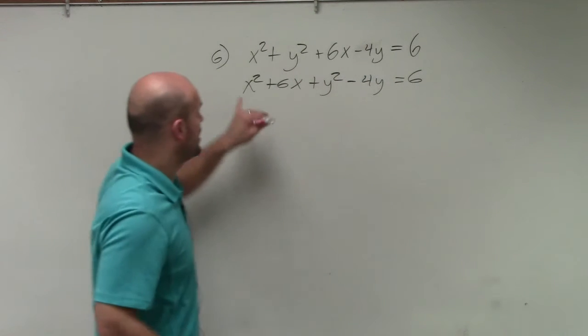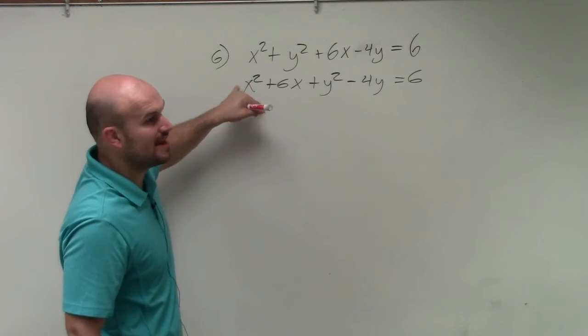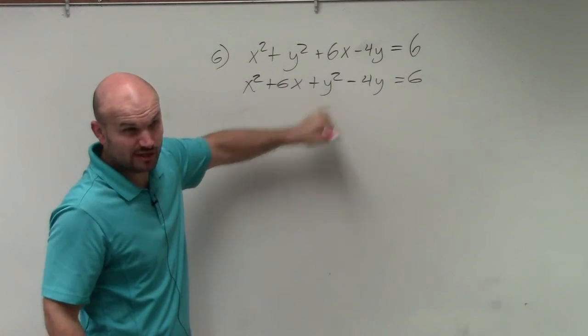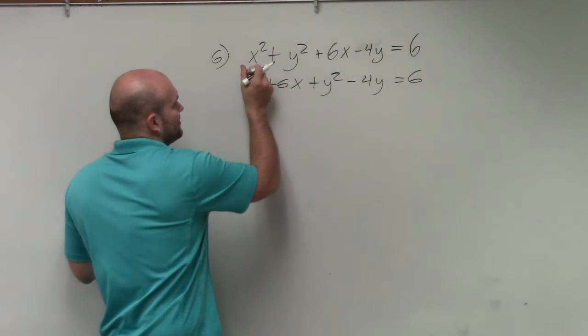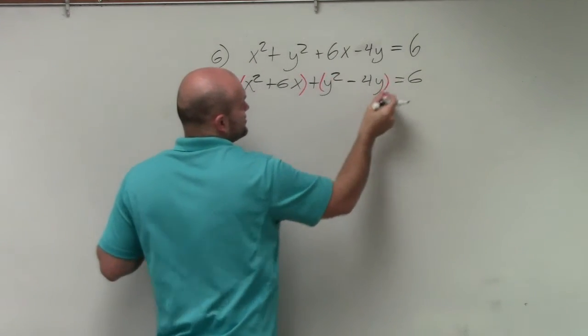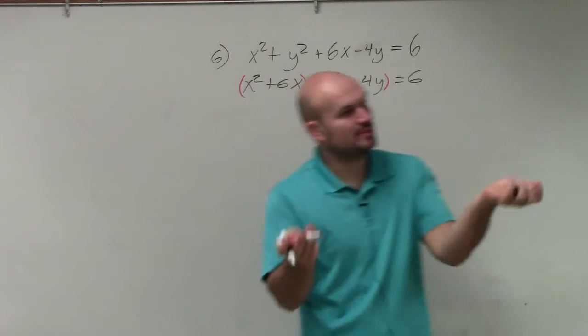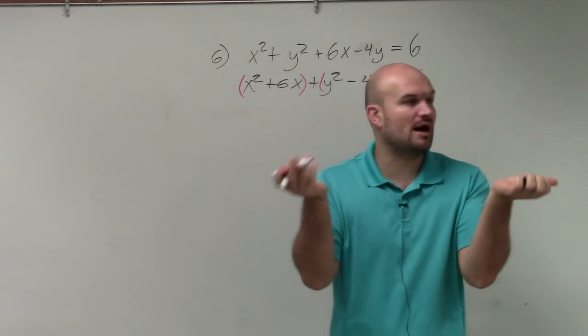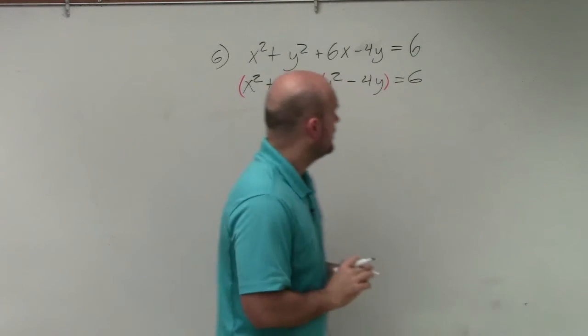Now, remember completing the square, our a of our quadratic term has to be 1, which in this case, we're good. So what I'm going to do, though, is just group them together, just so we kind of know. We're going to have to complete the square twice, because the form is x minus h squared and y minus k squared.